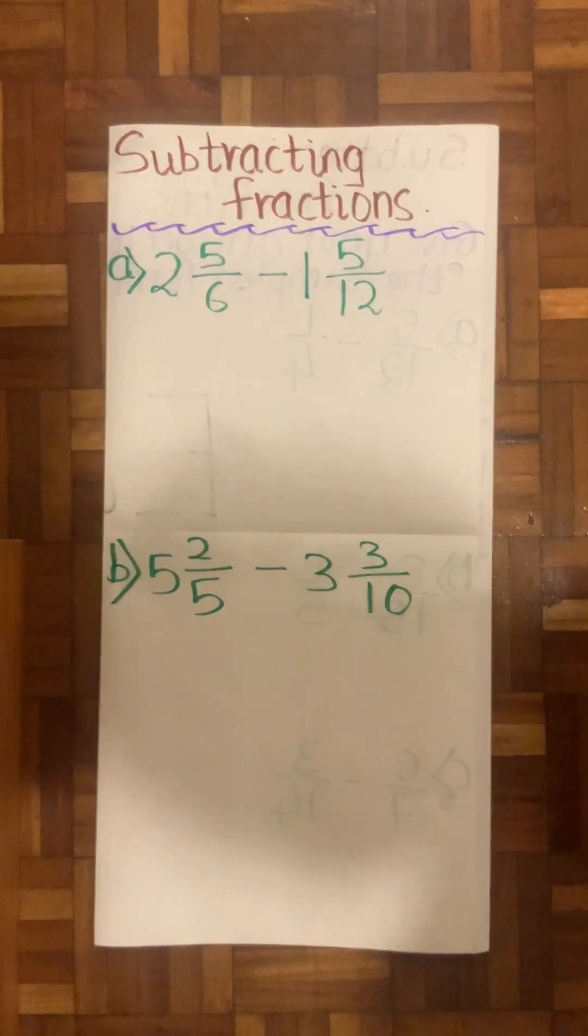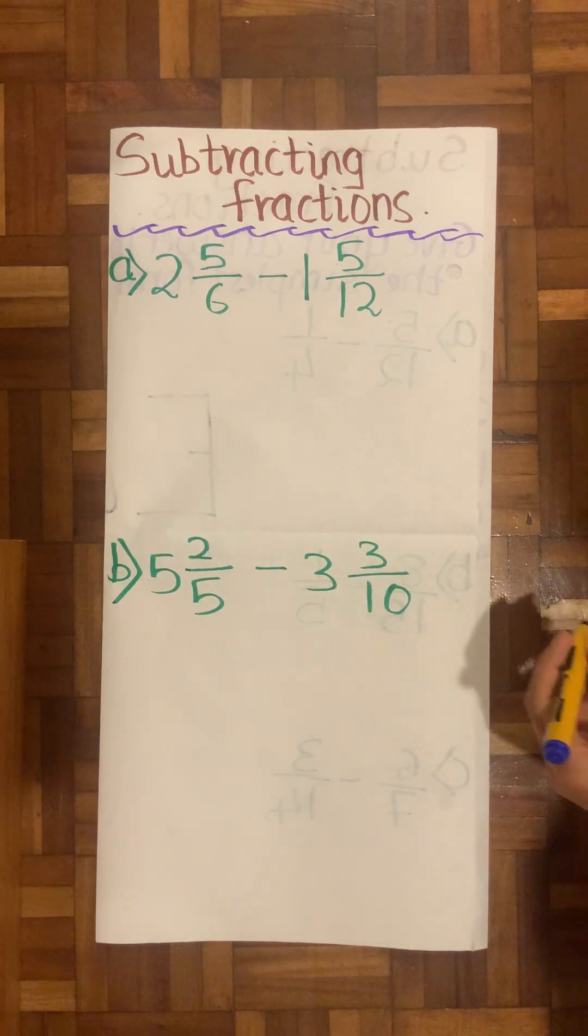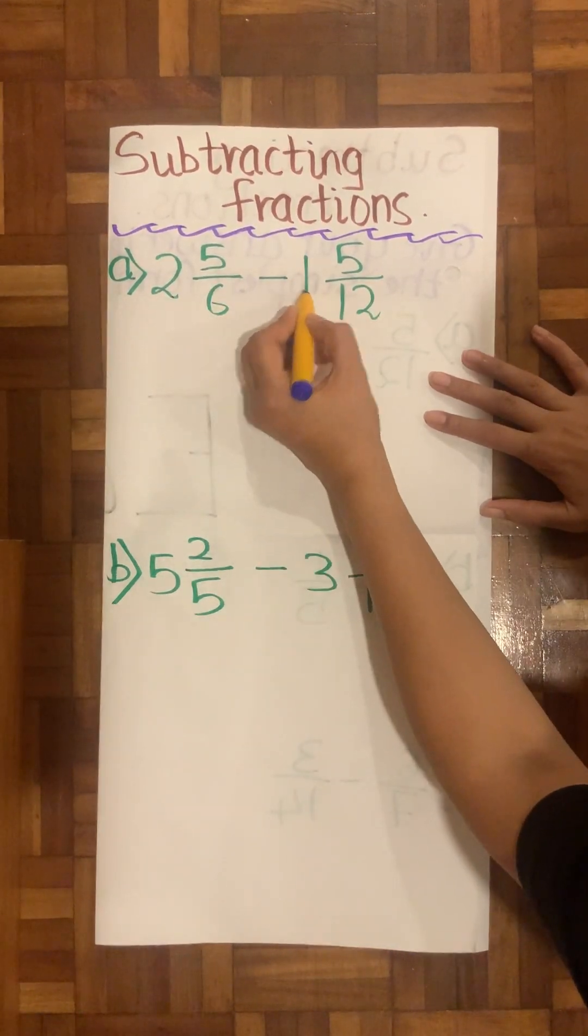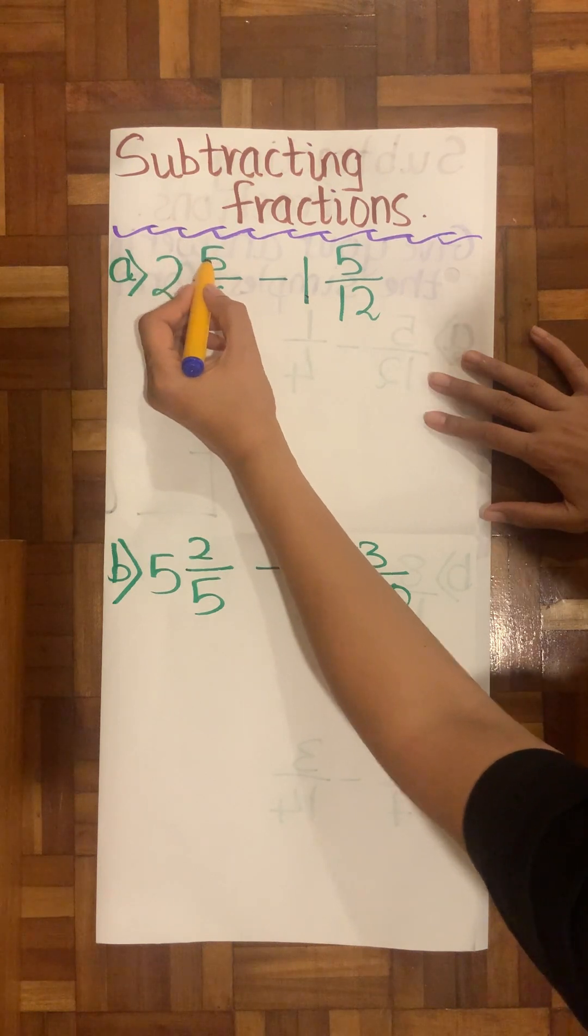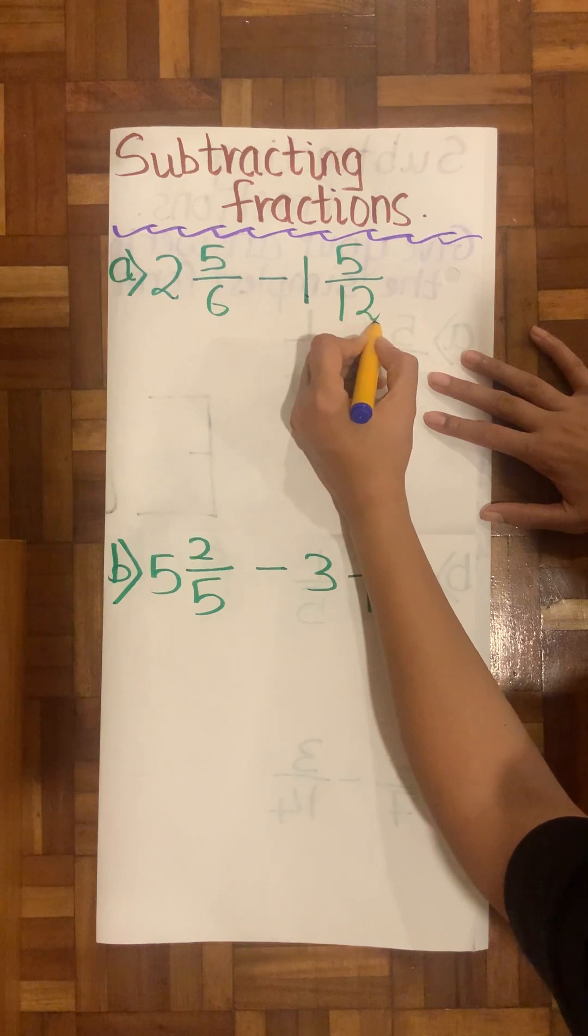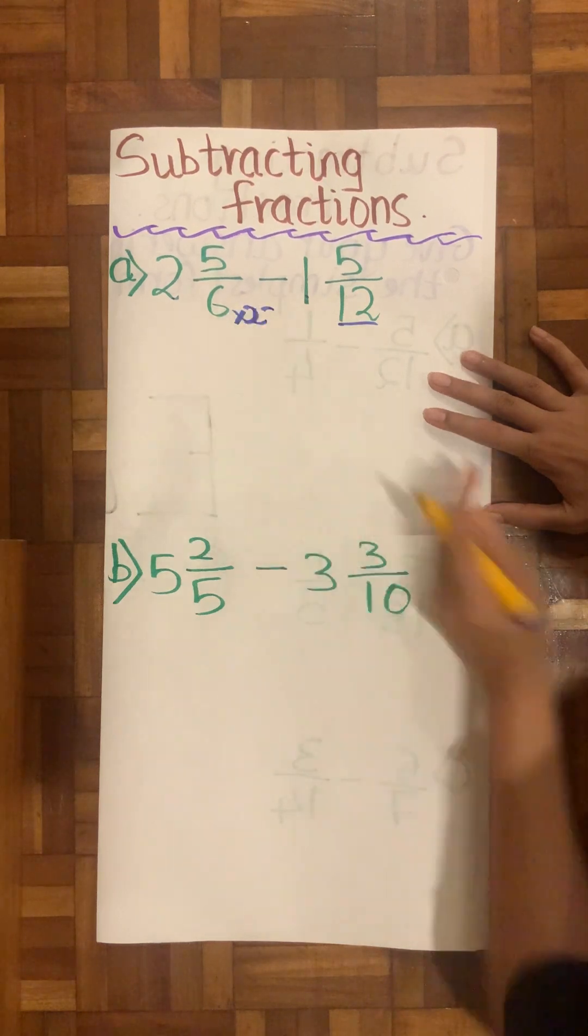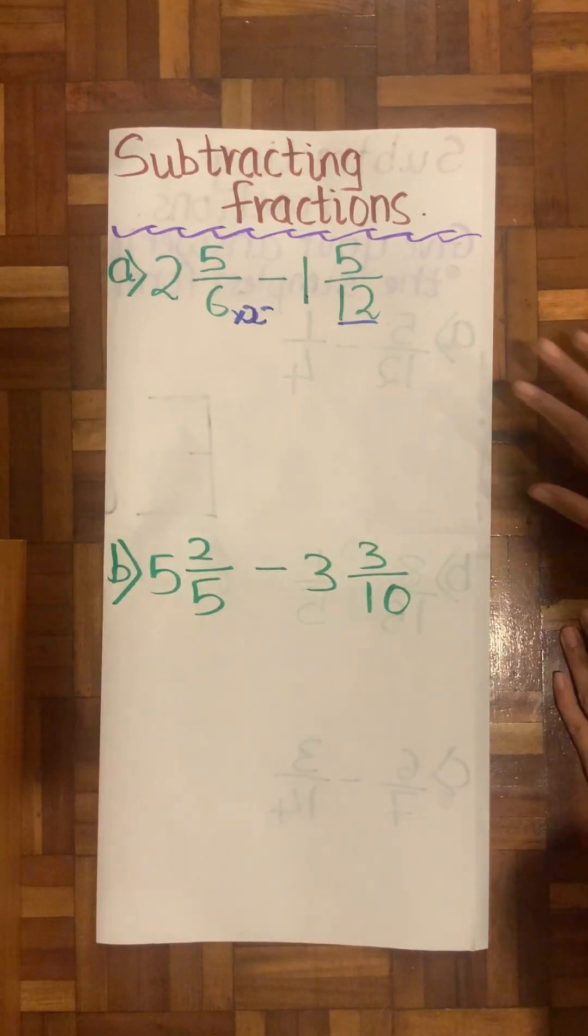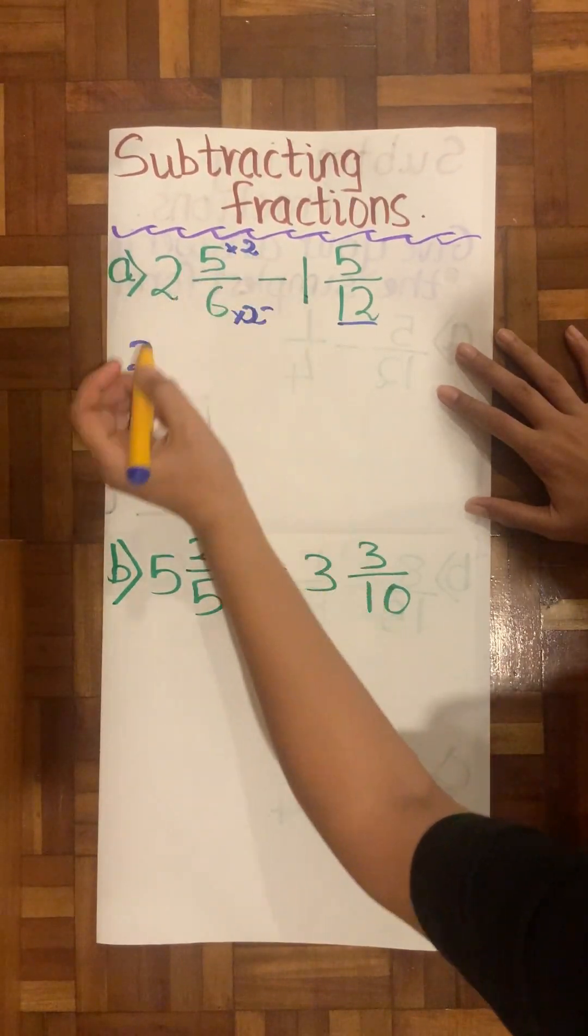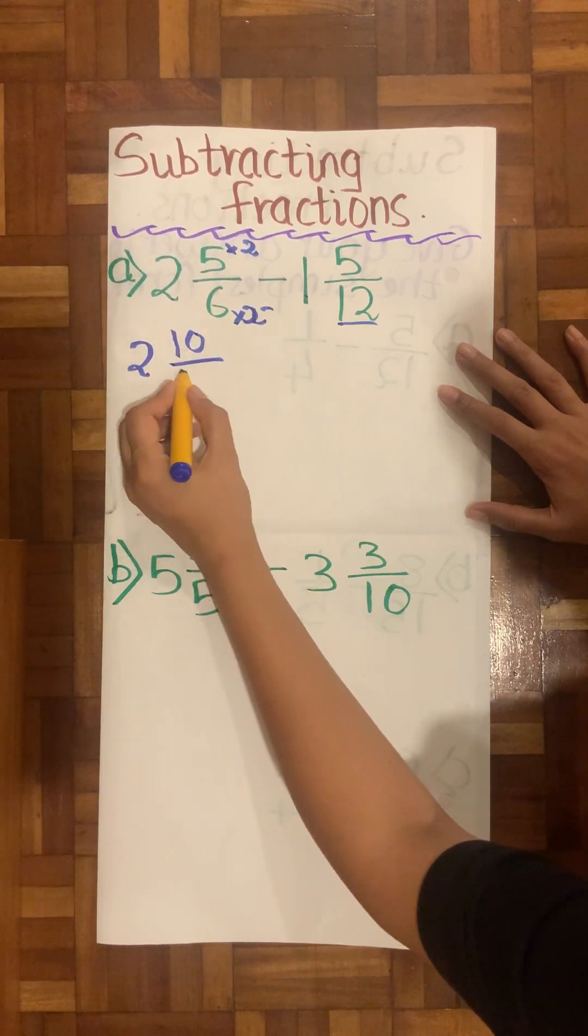The first question reads 2⁵⁄₆ minus 1⁵⁄₁₂. Here what we're going to do is as we see I have my two wholes and one wholes. The fraction we see is ⁵⁄₆ and ⁵⁄₁₂. So as my denominator is 12 I will try to make this as well 12. So we know 6 times 2 is 12 and 5 times 2 is 10.